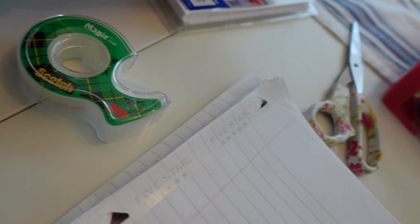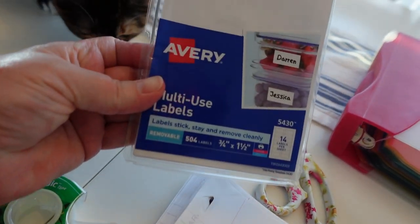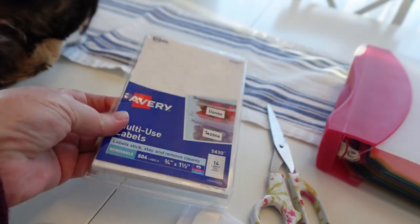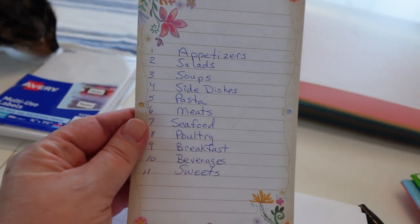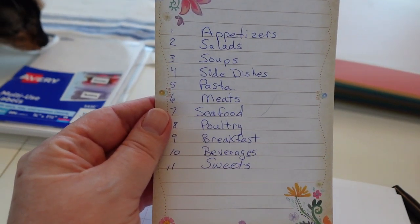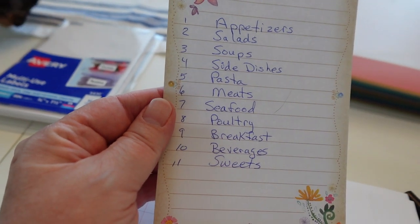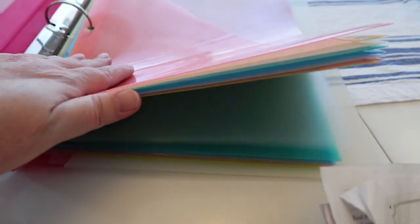Scissors, tape, and labels. And I've written down a list of the categories. So I have 11 here. And I believe I have 12 dividers with pockets in this binder.